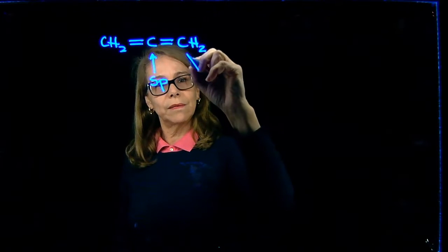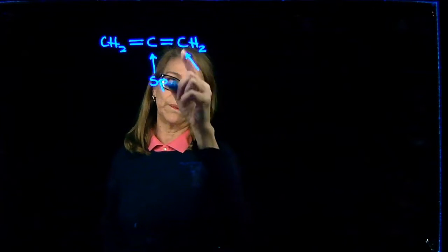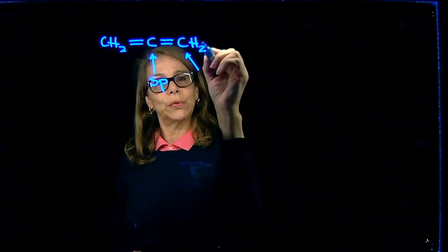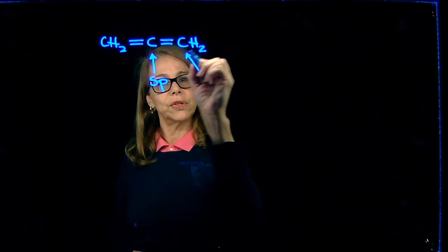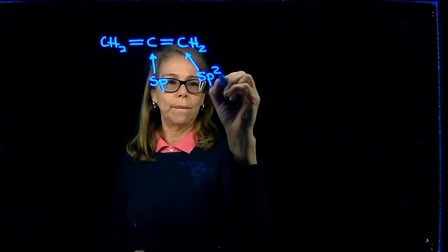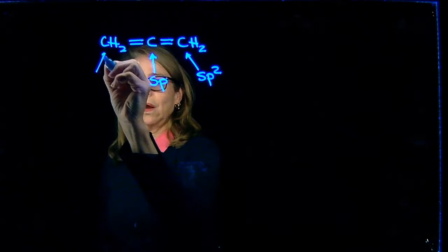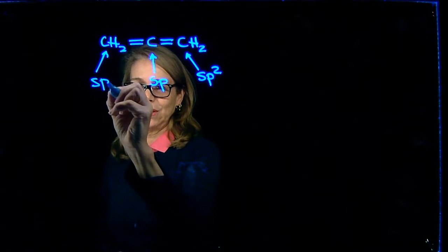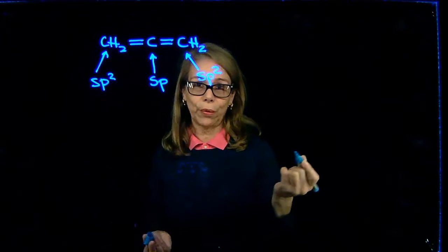Now the carbon to the side is bonded to two hydrogens and one carbon. So you'll be using an SP2 model. So same, the carbon to the other side. So I'm going to be drawing those orbitals.